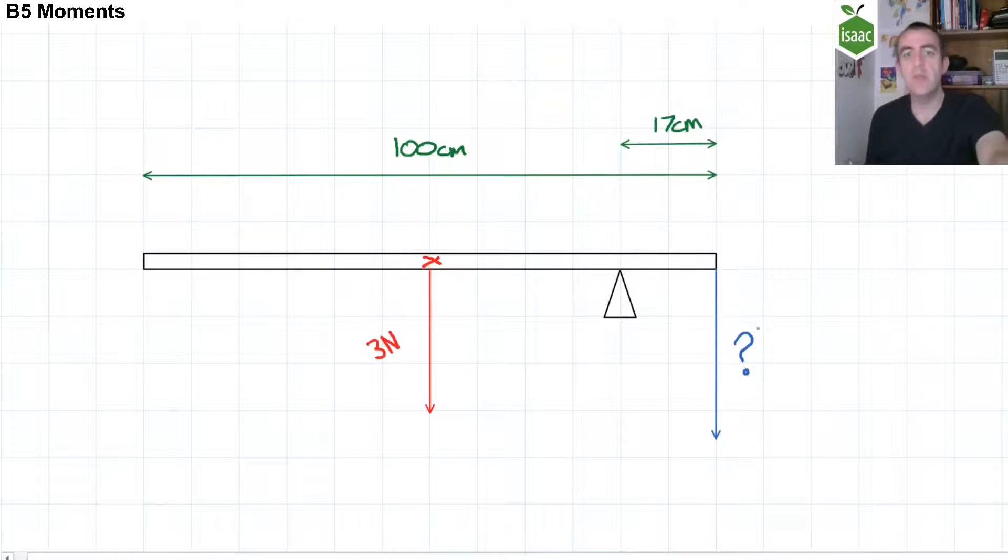How much weight do we need to balance this beam on the right-hand side? Well, the right-hand side is producing clockwise moment. The distance between the pivot and the line of action of the force, perpendicular displacement, is 33 centimetres. And that's because from the right-hand side, the middle of the beam is 50 centimetres to the left, but the pivot is 17 centimetres to the left, and 50 minus 17 is 33.